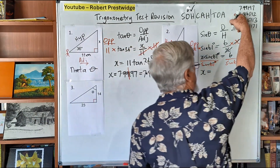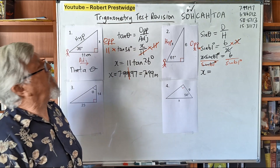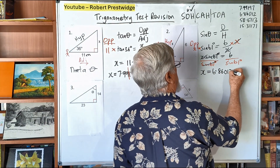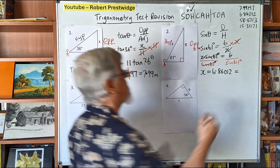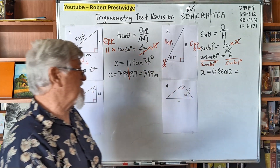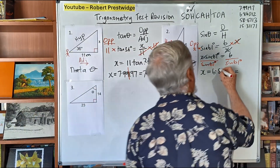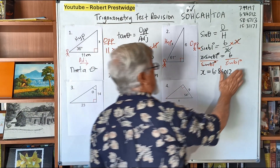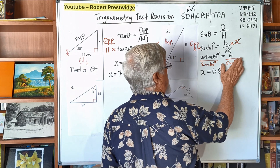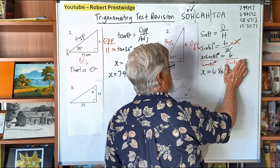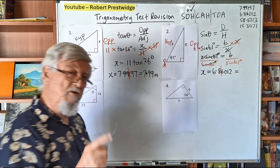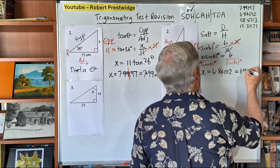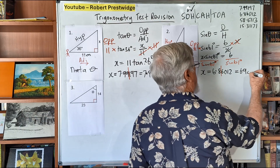The answer for number 2 is 6.86012. Most people will want the answer correct to one decimal place. Using the peekaboo method — is it going to stay 8 or become 9? The next number is big, so it rounds up — it's closer to 6.9. And of course, if this was centimeters, you'd write the unit.